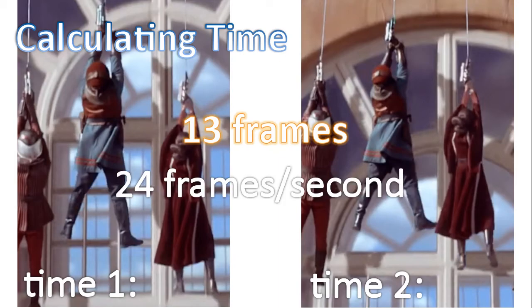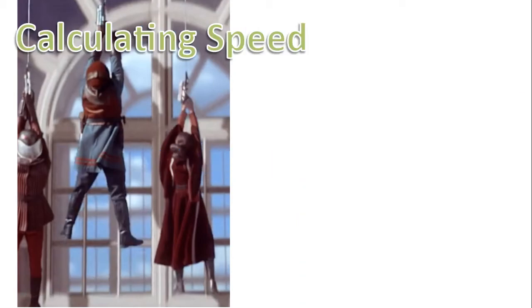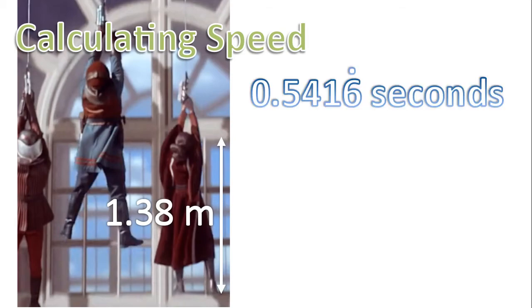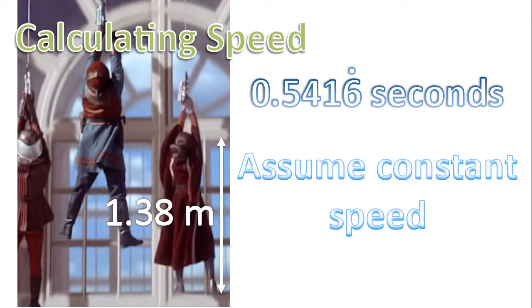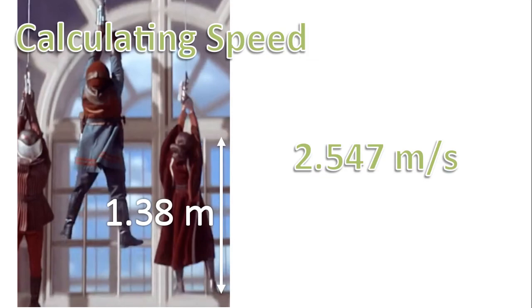The frame rate is 24 frames per second for this specific video. And dividing those two numbers, we end up with a time of 0.5416 seconds. So that means from when her foot passes the bottom of the glass to when her foot hits the top of the glass, 0.5416 seconds has passed. And now to calculate speed, we know the distance, we know the time, and of course we're assuming constant speed. And so dividing these numbers, we end up with this value here.